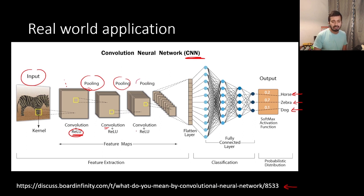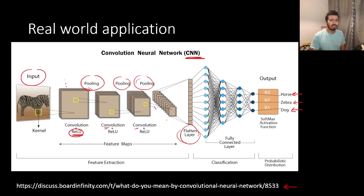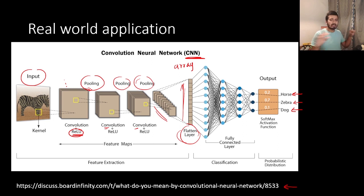Then there will be convolution and pooling again. Now I have flattened it. Once I flattened it I made it into a two by two pixel representation, and I can see it with a different array and a different line.